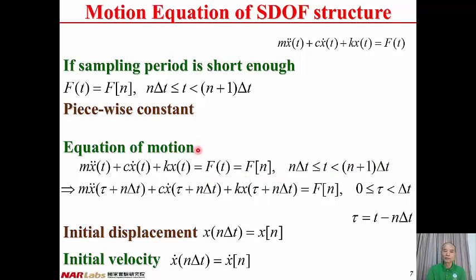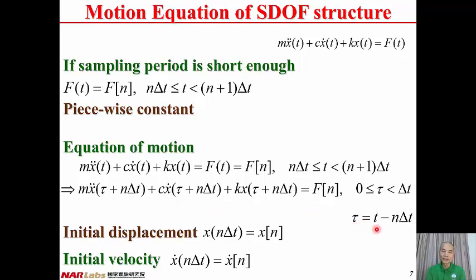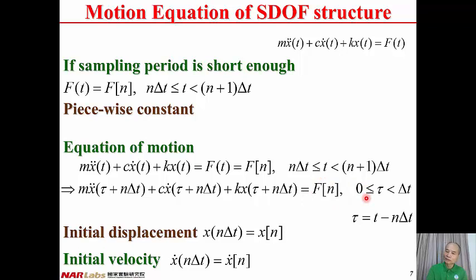If we are interested only in the time interval from n delta T to (n+1) delta T, during this time interval the forcing function is constant. Therefore, the equation of motion becomes M x-double-dot plus C x-dot plus Kx equal to Ft, where Ft is a constant. If we replace the variable T by tau, where tau equals T minus n delta T, the equation of motion becomes M x-double-dot(tau + n delta T) plus C x-dot(tau + n delta T) plus Kx(tau + n delta T) equals F_n.